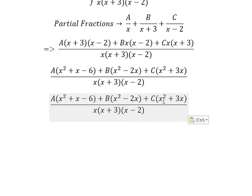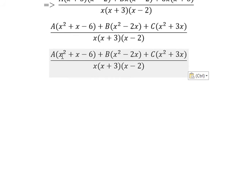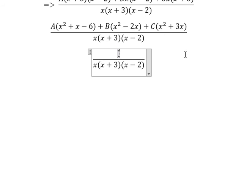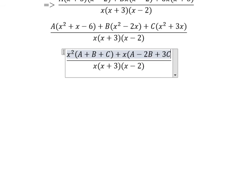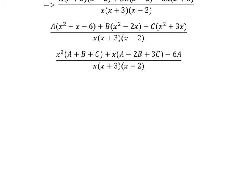Now we need to arrange based on the power of x. For x², we have A, B, and C, so A plus B plus C. For x, we have A minus 2B plus 3C. The constant term is negative 6A. Now we can make the system of equations.